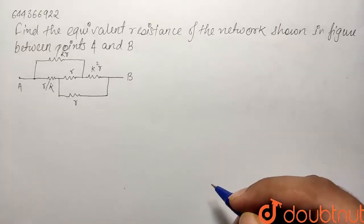So here we have a question from the chapter current electricity. Find the equivalent resistance of the network shown in the figure between the points A and B.